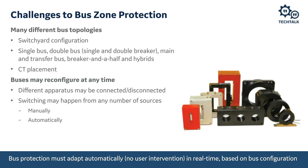Challenges to bus zone protection: An effective bus zone protection scheme should have flexibility to be applied at many different configurations due to the various bus topologies used. We'll discuss typical topologies and CT placements for bus zone protection. For example, there might be only one bus coupler CT, or for live tank breakers there might be a dead zone due to CT placement. In North America most installations are dead tanks, so this is less of an issue. Bus reconfiguration also provides challenges that our chosen bus protection scheme must handle.